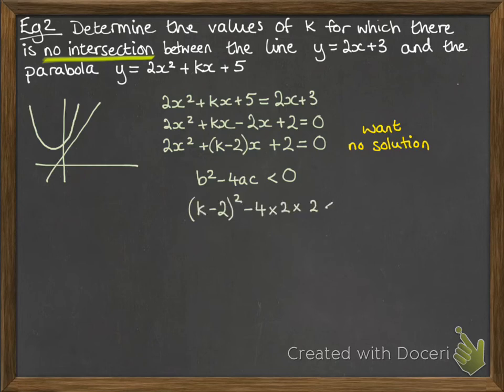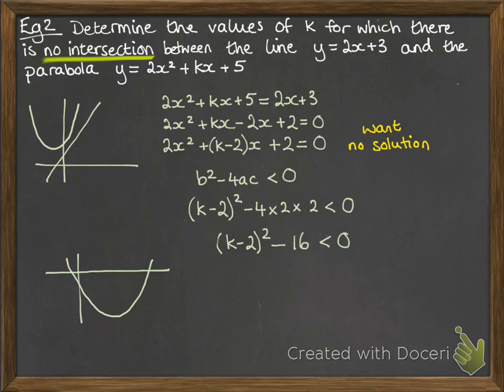So b squared minus 4ac is as follows, and we're going to set it to be less than zero. You can see now why we practiced inequalities in the last video. Now working through this equation, or inequality, we have the following. Remember to solve it as if it was equal to zero, and then work out what the inequality is like. So this is k minus 2 squared minus 16.